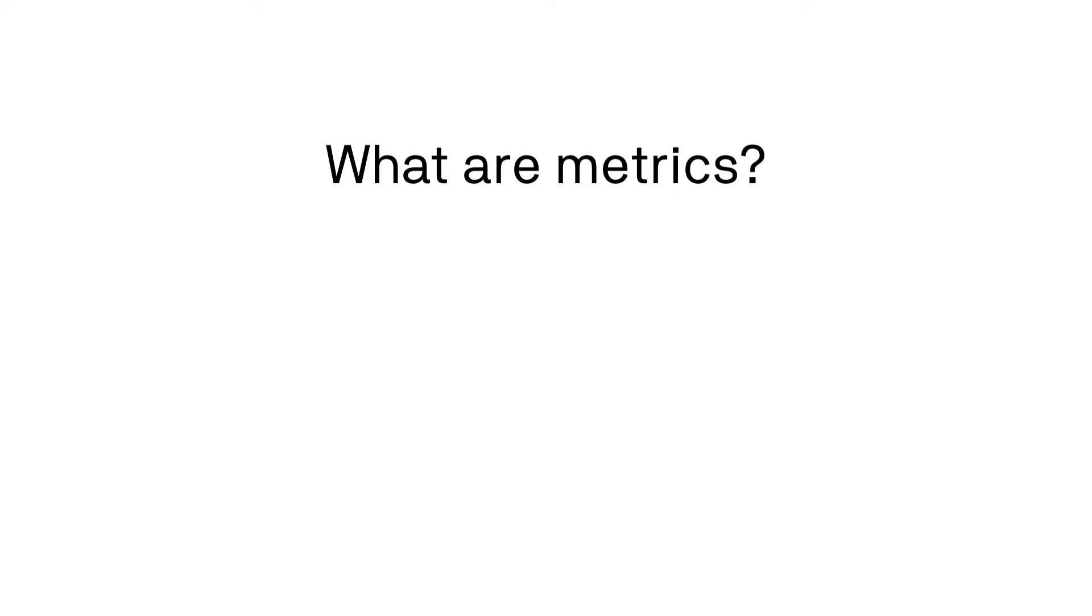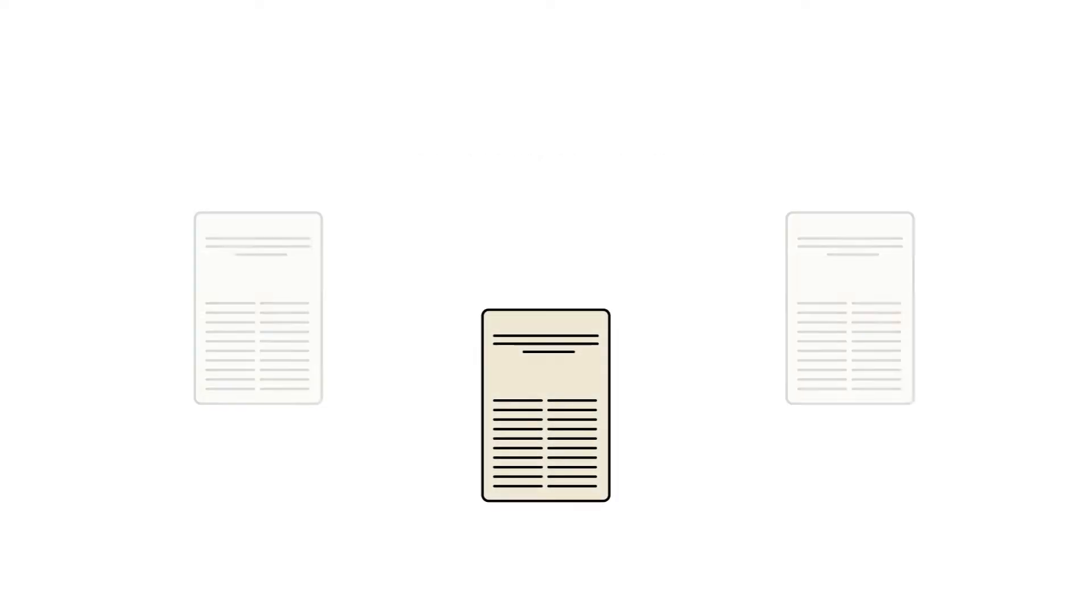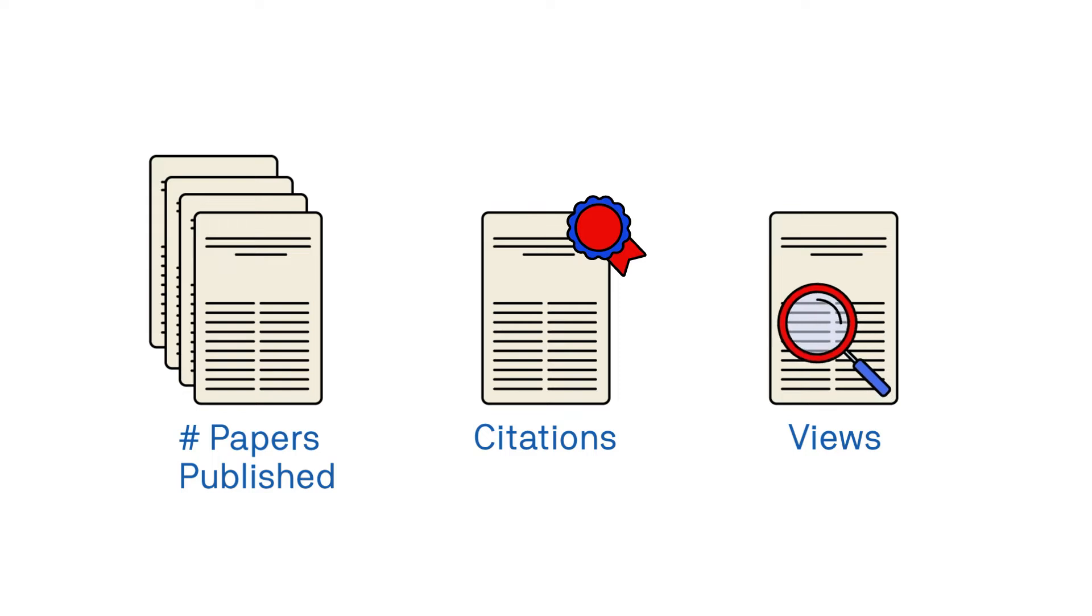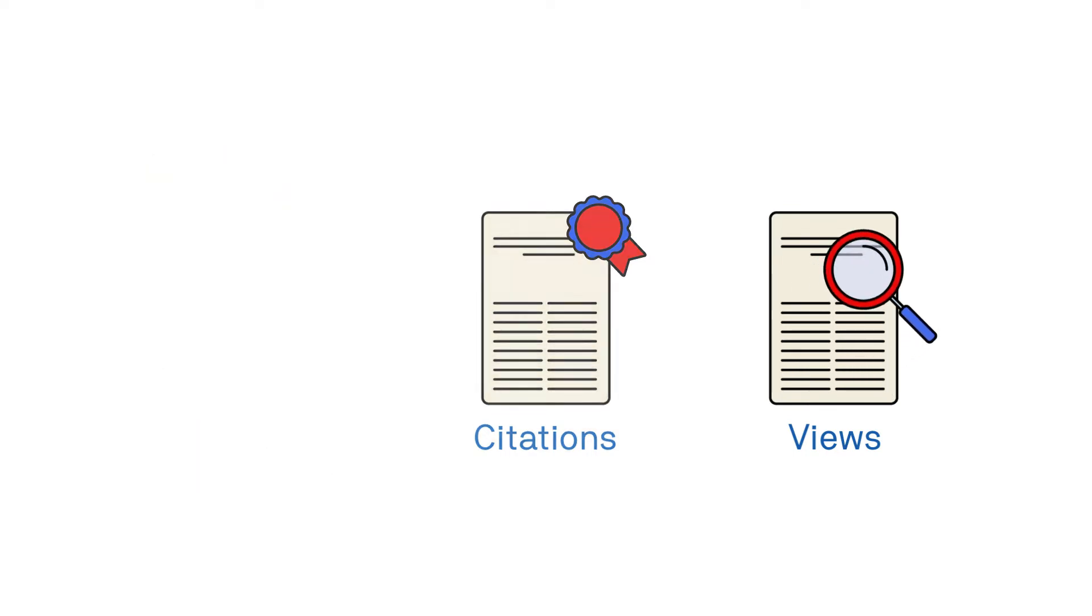What are metrics, and why are they important? Metrics are indicators for how impactful your research outputs are. Numbers of papers published, citations, views – these are all examples and they can provide information about your track record and how your research has been used.